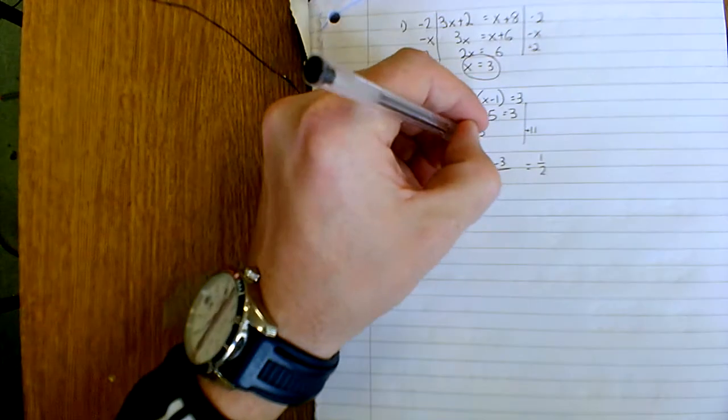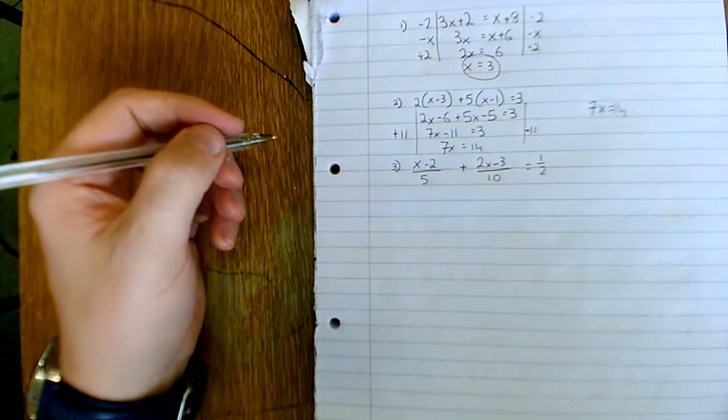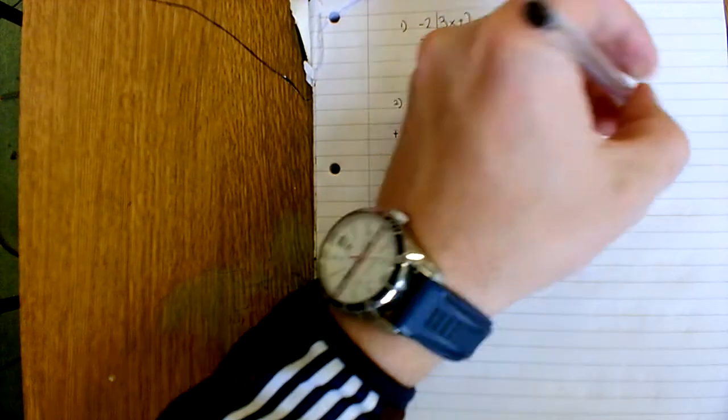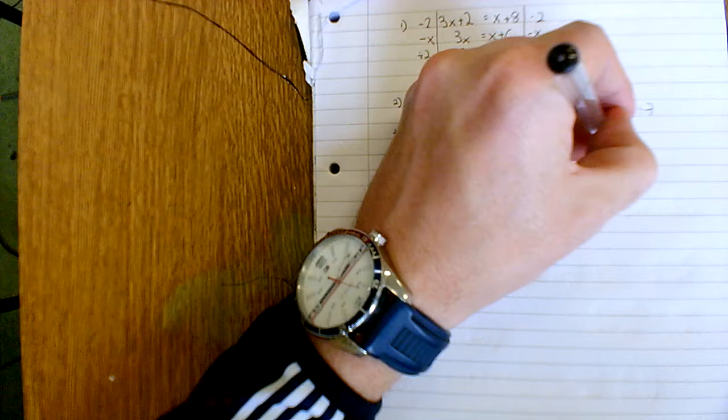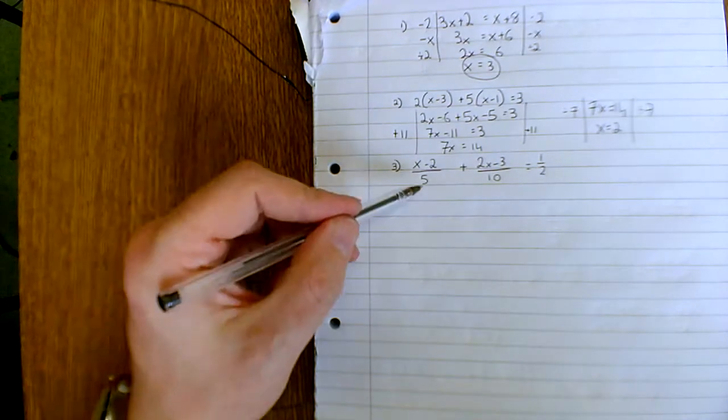If I do it to this side though, I must do it to the other, which will leave me with 14. So 7x equals 14. Again, divide it by 7, divided by 7, so x equals 2. Okay, this should be easy, right? Let's have a look at this one.